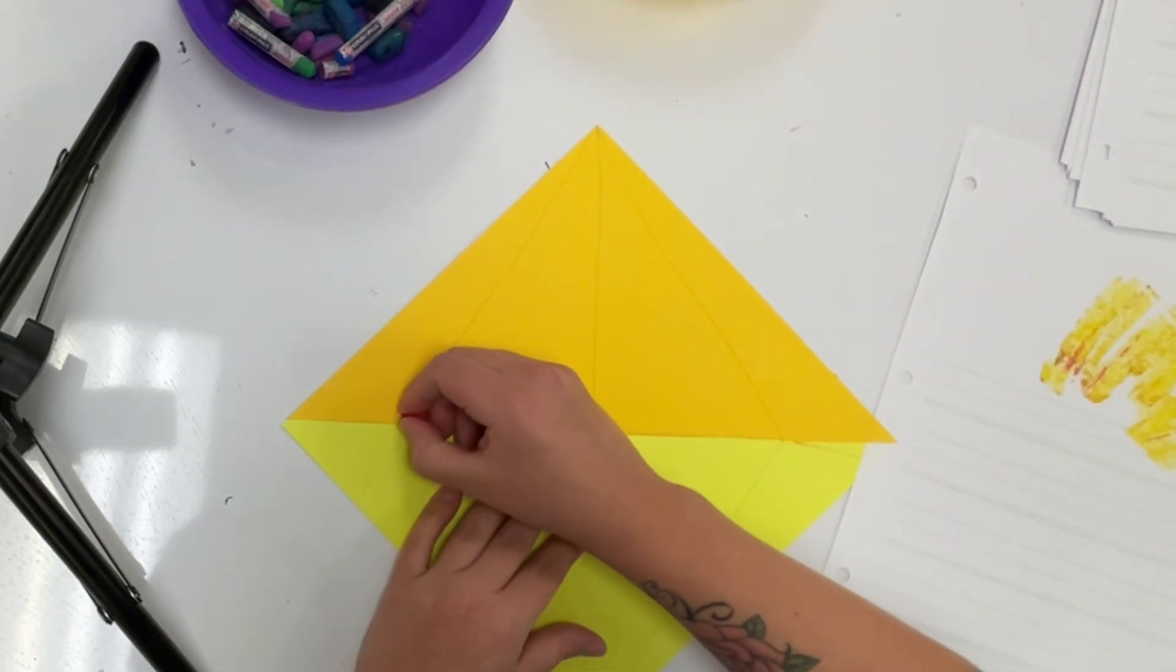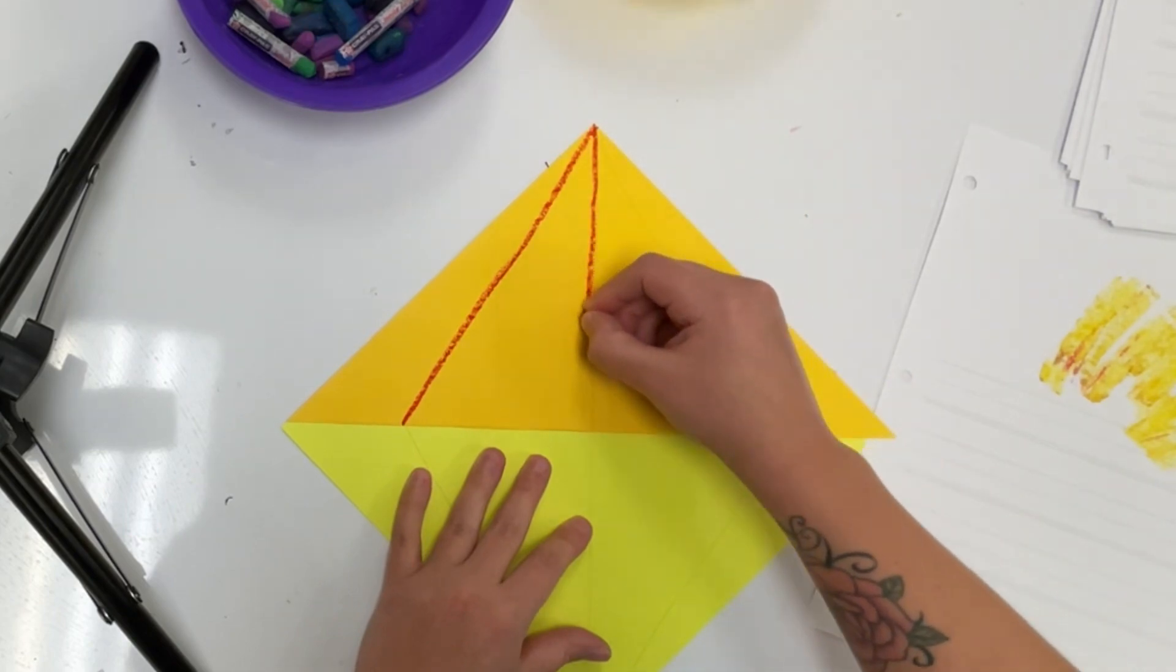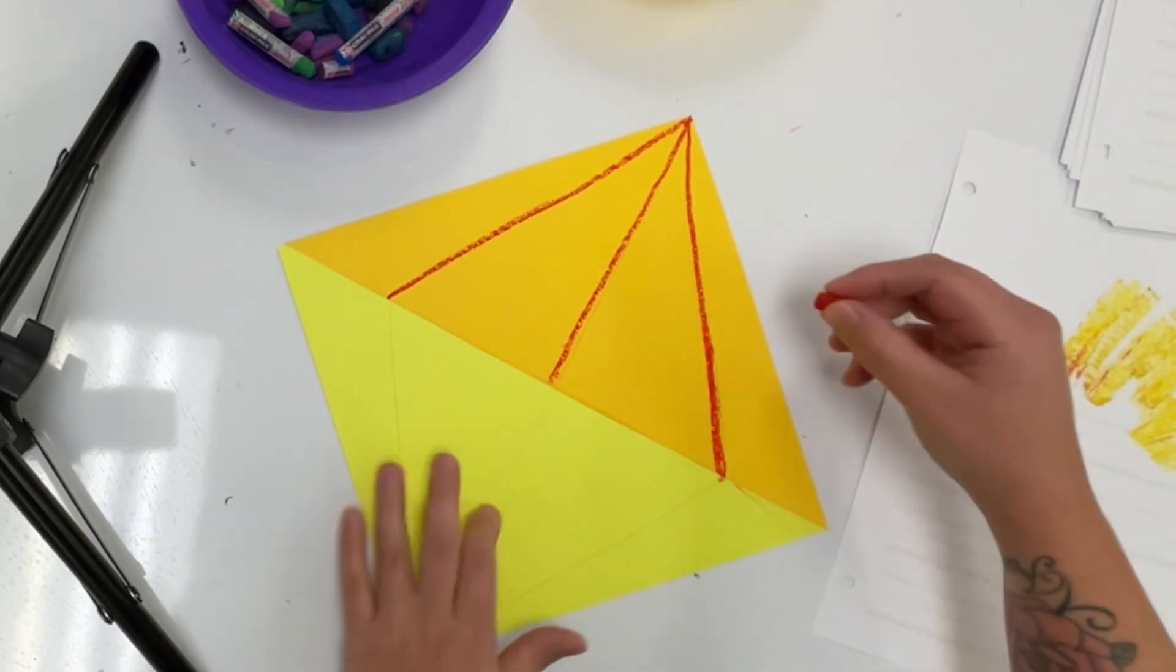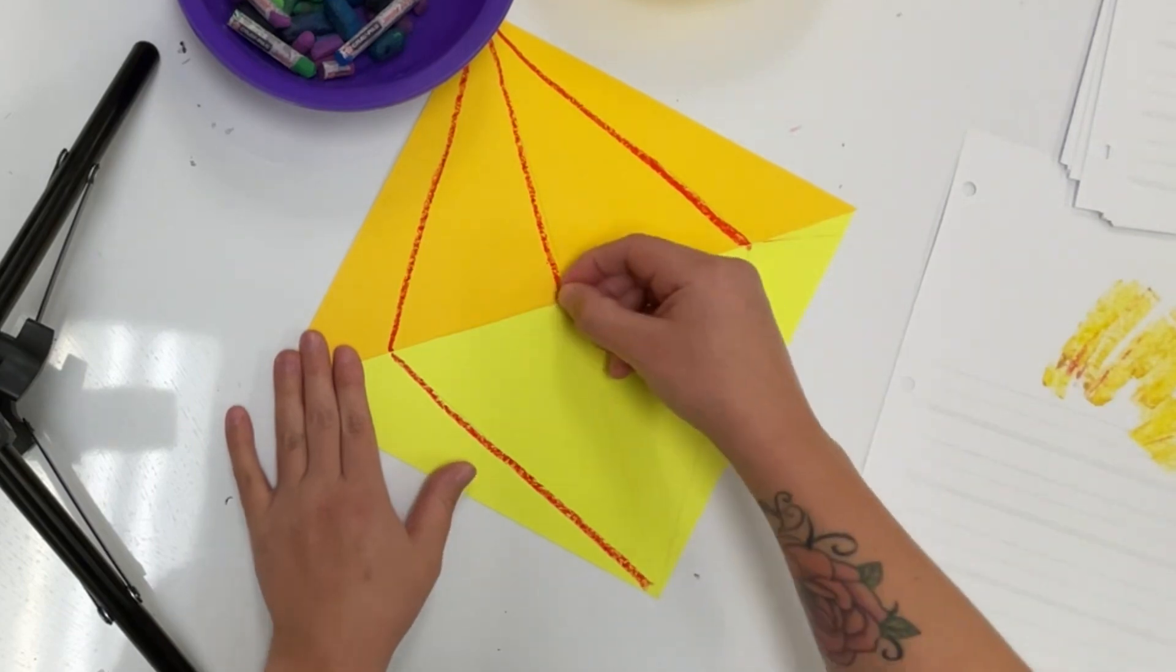Now I'll outline those lines that I made on my diamond so you can see them better. And again, if you want to do more than three lines on each side, you totally can.